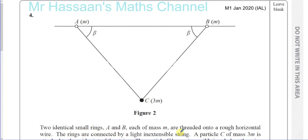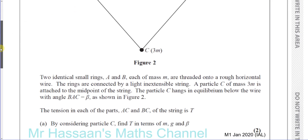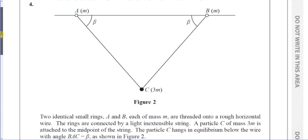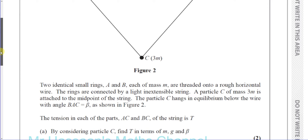Two identical small rings A and B, each of mass M, are threaded onto a rough horizontal wire. The rings are connected by a light inextensible string, and there is a particle C of mass 3M attached to the midpoint of the string. Particle C hangs in equilibrium below the wire with angle BAC equal to beta degrees. The tension in each part AC and BC is T.